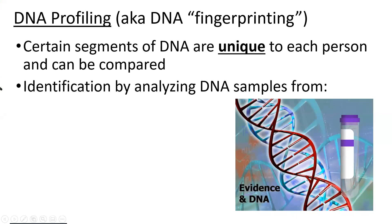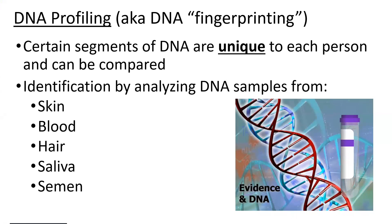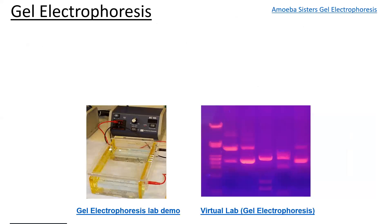We identify people from DNA. You've probably seen shows like CSI or Law and Order where they use DNA profiling to catch a criminal — they have a DNA sample from the crime scene and match it with suspects. We can get DNA from any place that has a nucleus in a cell: skin left behind at a crime scene, blood, hair, saliva, or semen in a rape case.